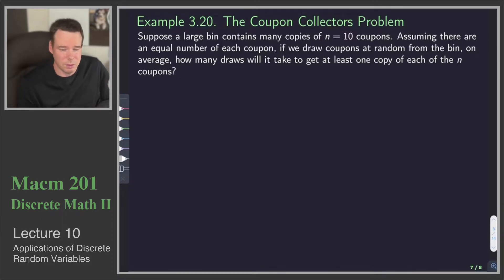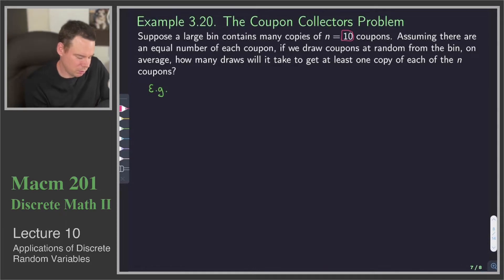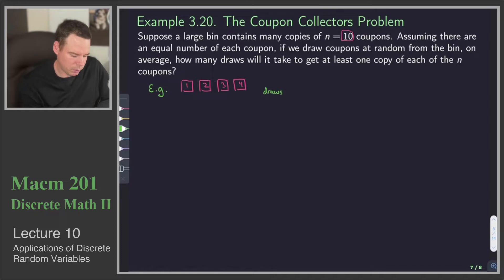Let's get a feel for what's going on here by playing with a small example. We can use an arbitrary n, but in our example below, let's take four coupons so I can draw them. So we're going to assume we have four types of coupons. Here are our coupons, and we are interested in doing some draws. So we're going to pick a coupon: draw one, draw two, draw three, and we'll just keep going and fill in these spots.